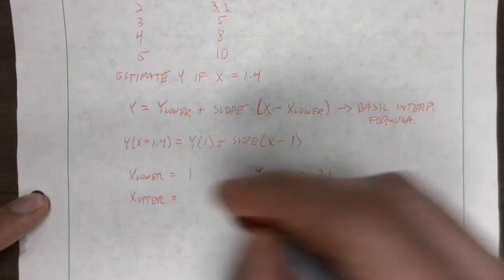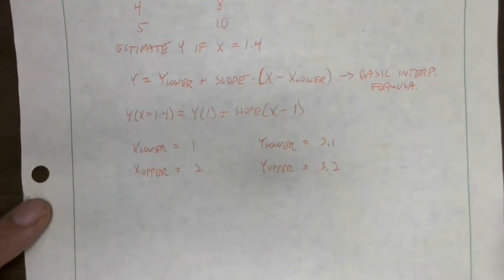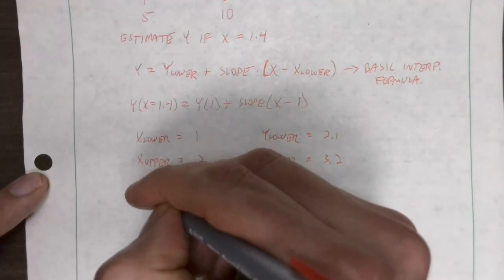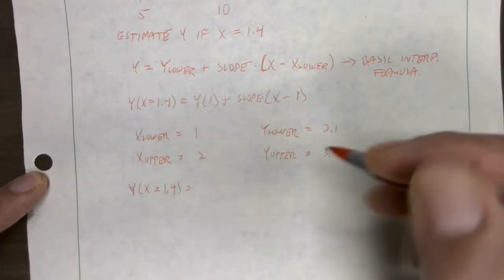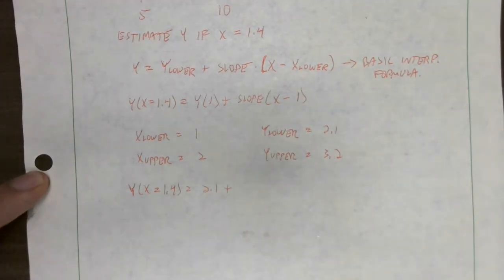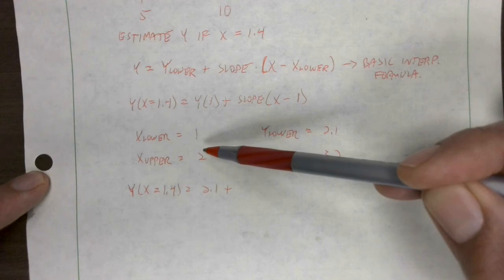So x_lower is 1, y_lower is 2.1, x_upper is 2, and y_upper is 3.2. Now we can plug these into our formula. y at x equals 1.4 is equal to the lower value 2.1 plus the slope. The slope by definition is change in y over change in x, so that's going to be (3.2 - 2.1) over (2 - 1).